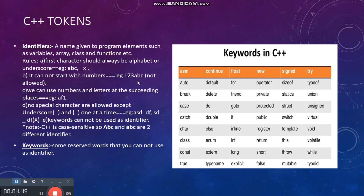The second rule is that an identifier cannot start with a number, as shown in the invalid identifier example. The third rule is that numbers and letters can be used at succeeding places — it is compulsory to write an alphabet first, then you can use numbers or underscores. The fourth rule is that no special characters are allowed except underscore, and two consecutive underscores are not allowed — only one is allowed.